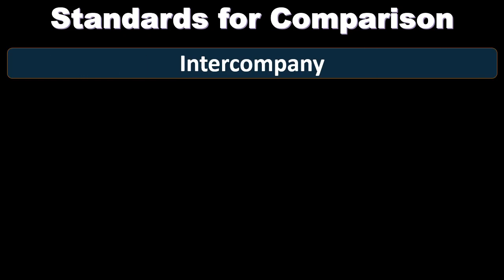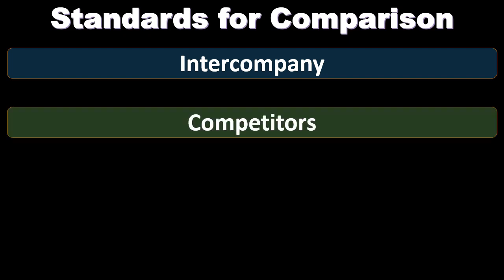We have the intercompany type of comparison — that's a comparison with our own performance. For example, we might compare the prior year to the current year and look at our intercompany performance. Then we have competitors; we might benchmark to our primary competitors. Ratio analysis makes it much easier to do this type of comparison, which is one of the major goals of these calculations.